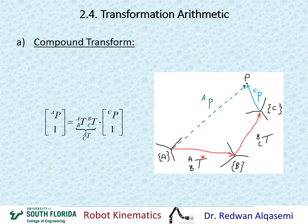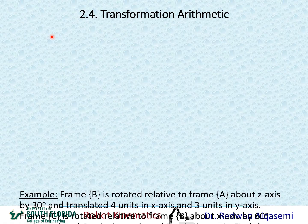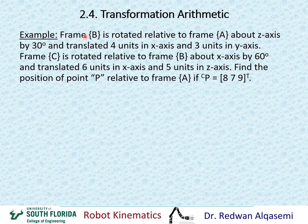This is the compound transform when we have more than one transformation matrix, and we need to get the compound transform to find the definition of P relative to frame A. For the worked example: frame B is rotated relative to frame A about the Z axis by 30 degrees and translated 4 units in X and 3 units in Y. Frame C is rotated relative to frame B about the X axis by 60 degrees and translated 6 units in X and 5 units in Z.